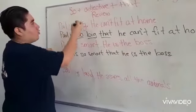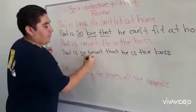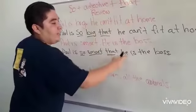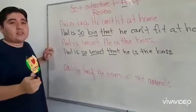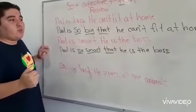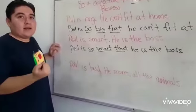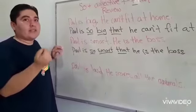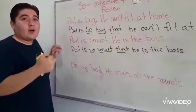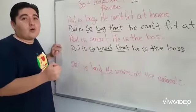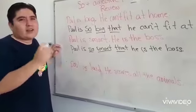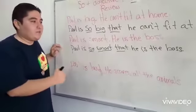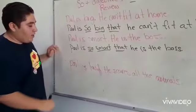Remember the structure: 'so' + adjective — in this case it's 'smart' — 'that he is the boss.' The structure is to say when someone is so much of something, there's a consequence of that. Hay una consecuencia de cuando es un adjetivo, ya sea si es muy inteligente, muy alto, muy llenito, lo que sea muy rápido, le pasa algo por ese mismo adjetivo.